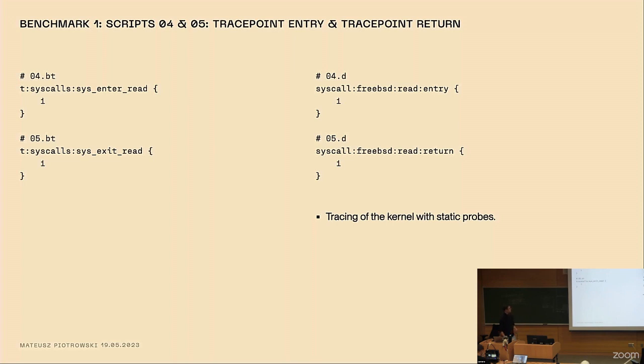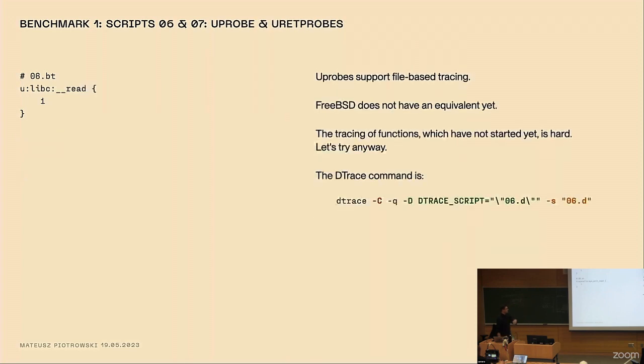For trace points, entry and return, this mapped pretty cleanly. On Linux, you have the trace point system call sys-enter-read. On FreeBSD, you have the handy syscall provider, so that's nice.